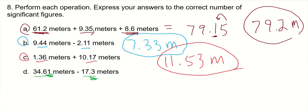We have to have an answer that matches the placeholder of the worst measurement. And that's this measurement here, that's worst. So let's punch this in our calculator. 34.61 minus 17.3.